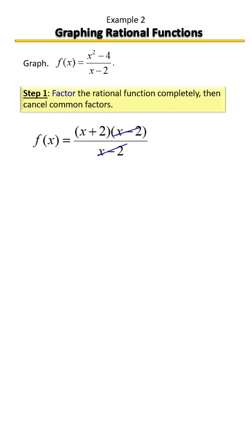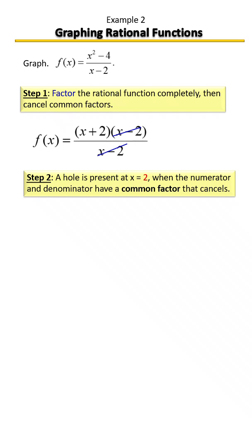Whenever you have a common factor that factors out of the top and the bottom, it is where a hole is going to be present in your graph. In this case, to find out where the hole is going to be present, just simply solve for x.